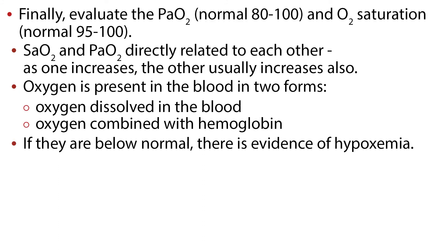It is also important to know the oxygenation status of a patient. The partial pressure of arterial oxygen is the amount of oxygen that is dissolved in the blood. It is referred to as PaO2 and is normally 80 to 100 mmHg. The PaO2 does not play a role in acid-base regulation. However, low PaO2 indicates an alteration in respiratory function or breathing air with a low level of oxygen.